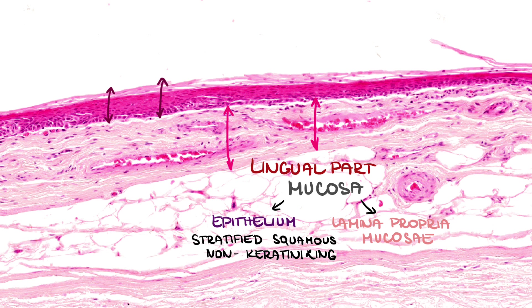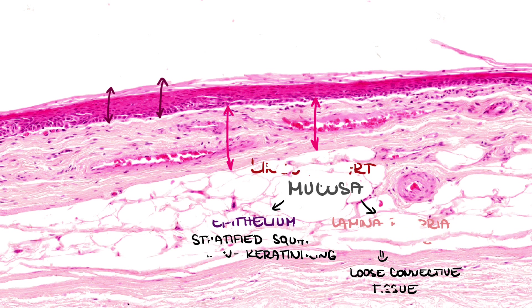Lamina propria is made of loose connective tissue, similar to submucosa, but contains finer collagen fibers and more migratory cells, like lymphocytes and plasma cells.